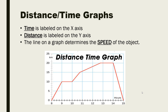We can also represent motion with something called a distance-time graph. It's very important to read the titles of your graph, because a flat line on a distance-time graph means something different than a flat line on a velocity-time graph. Similarly, a negative slope means something different on a distance-time graph than it does on a velocity-time graph.